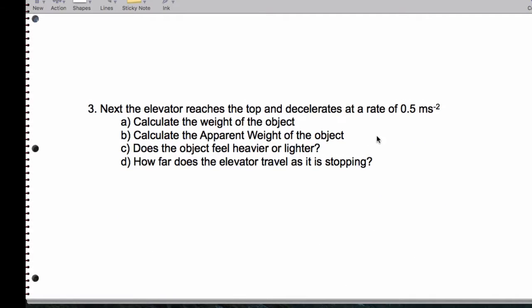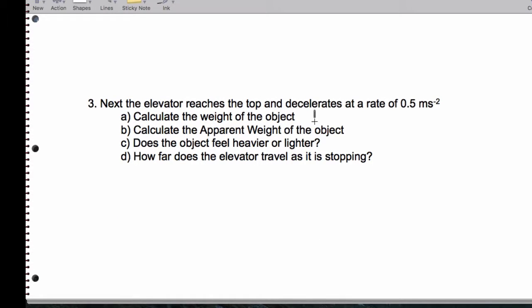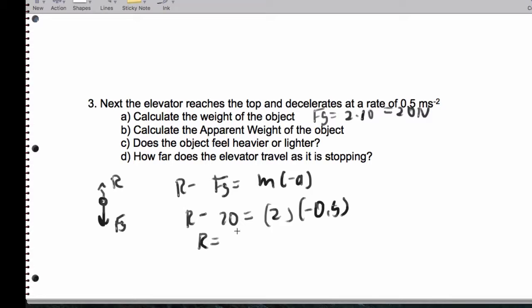Continuing with question number 3. The weight of the object, you notice how it doesn't change. 2 times 10, 20 newtons. Now, we decelerate at a rate of 0.5 meters per second squared as we approach the top. So we've got our weight. We've got our reaction force. R minus Fg still equals M, but now the acceleration is negative. So we have the reaction force minus 20 equals 2 times negative 0.5. So R ends up being 19 newtons. So it actually feels lighter.